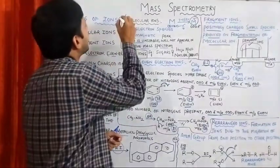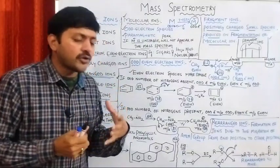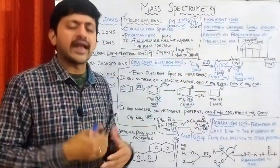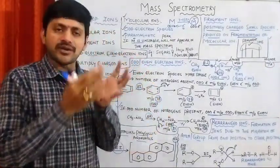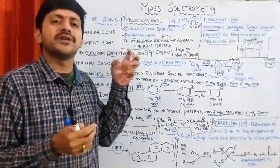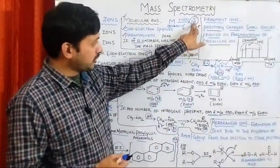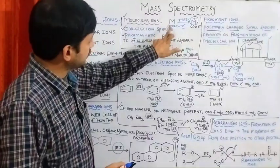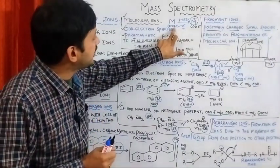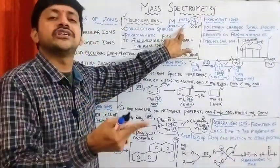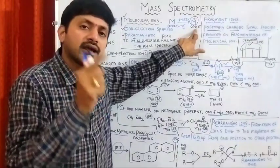Let's see the first type of ions — molecular ions. Already discussed on molecular ions, this is how the molecular ion is formed: an organic molecule in vapor state undergoes electron beam bombardment. We say that the organic molecules lose an electron, forming radical cation species.